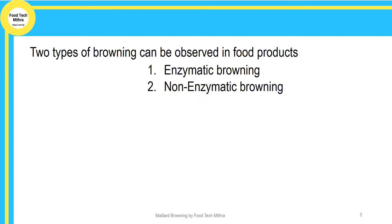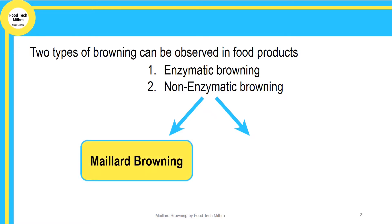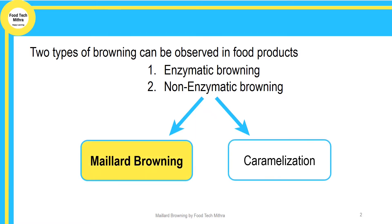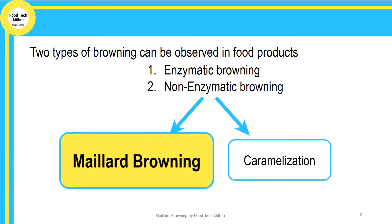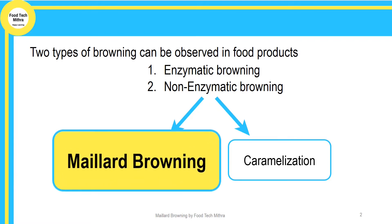Normally, browning of foods can be classified into two types: enzymatic browning and non-enzymatic browning. In enzymatic browning, enzymes take a main role in turning the product brown, whereas in non-enzymatic browning there is no participation of enzymes — other components take part. This non-enzymatic browning can be further classified into two types: Maillard browning and caramelization.